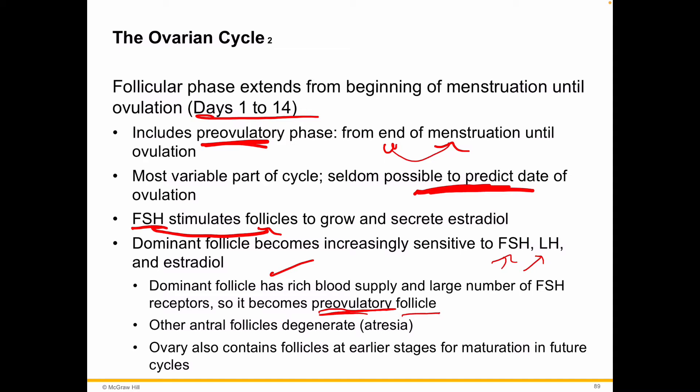The dominant follicle develops into what we call a pre-ovulatory follicle — this is the one that will be released. The other follicles are called antral follicles, and they degenerate through a process known as atresia. The ovary also contains follicles at even earlier stages of maturation for future cycles.